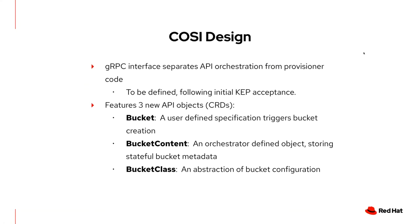To dive into the design itself, we're looking at introducing three new API objects: a Bucket, Bucket Content, and Bucket Class. The Bucket is similar to a PVC — it's a user-created object that triggers the provisioning of a new bucket by the sidecar and the provisioner-authored driver. The Bucket Content is analogous to a persistent volume — it represents a cluster-scoped administrative view of the bucket containing metadata that you don't necessarily want users to be privy to. And Bucket Classes, very similar to storage classes, provide an object store-tailored API to represent a set of parameters that users would reference from their bucket object.